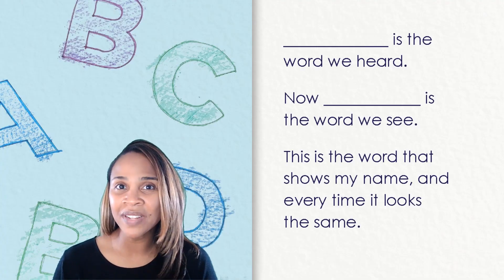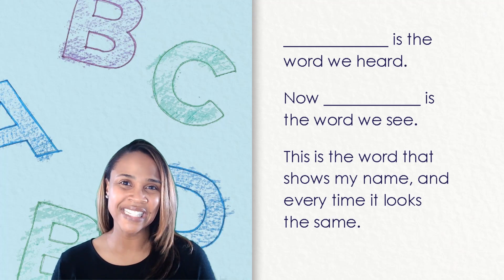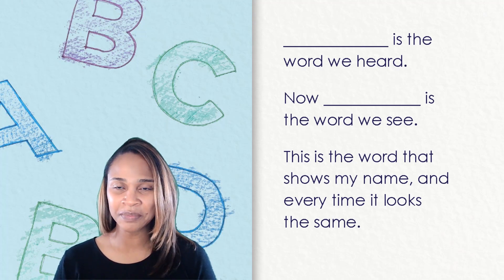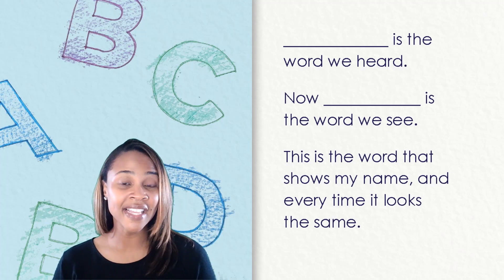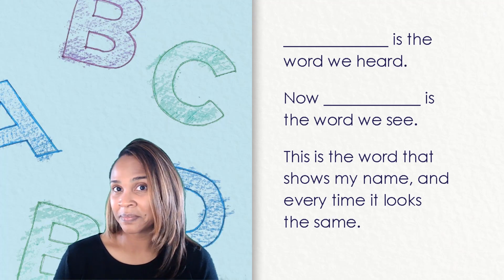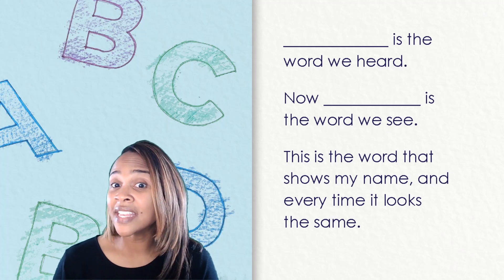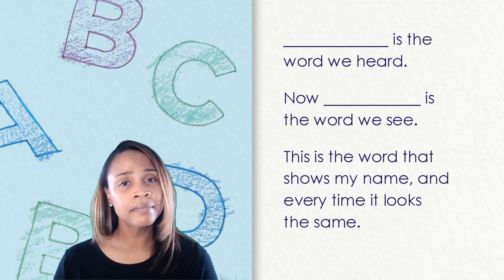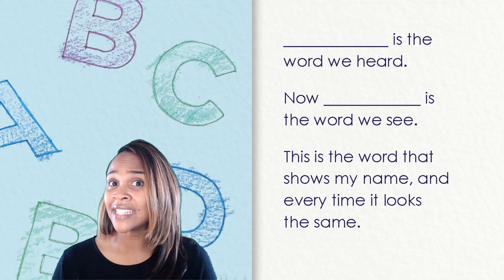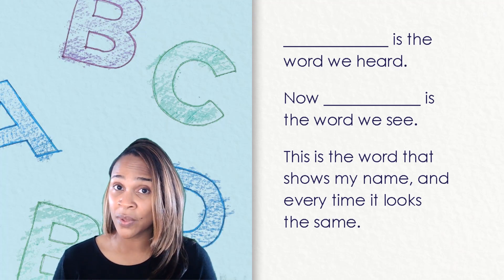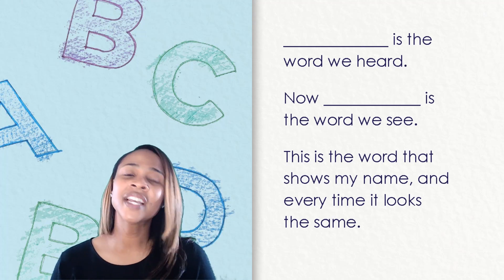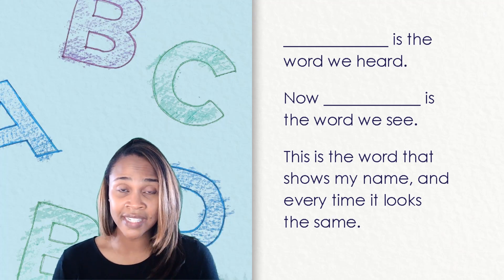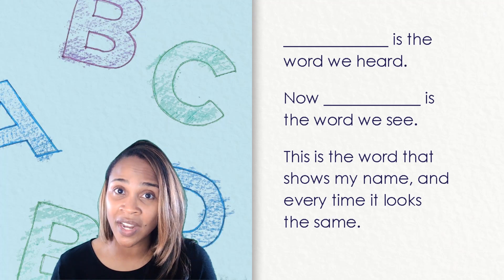I have a little chant that I would like to share with you. I want you to listen closely as I read through the chant and notice a few things. Ready? Is the word we heard, now is the word we see. This is the word that shows my name and every time it looks the same. Did you notice that I didn't say anything when I was on those blank spaces? There are lots of other words that I read through my chant, but I didn't know what word to say on those blank lines because there was no word there.